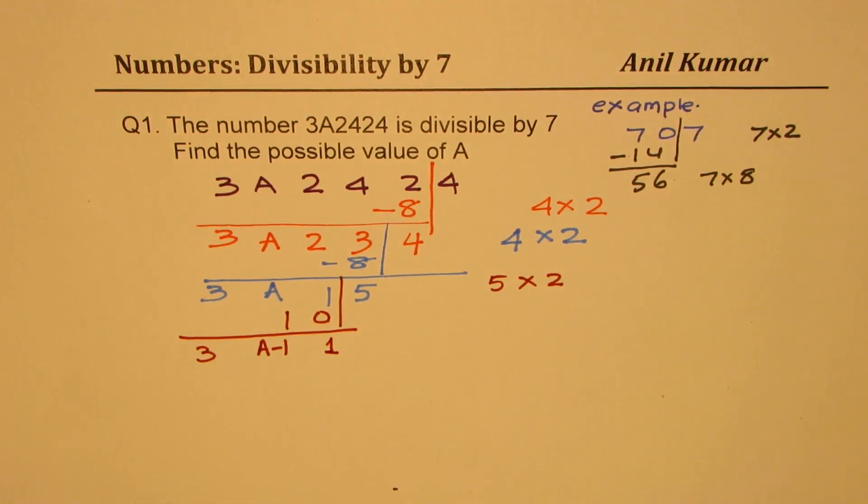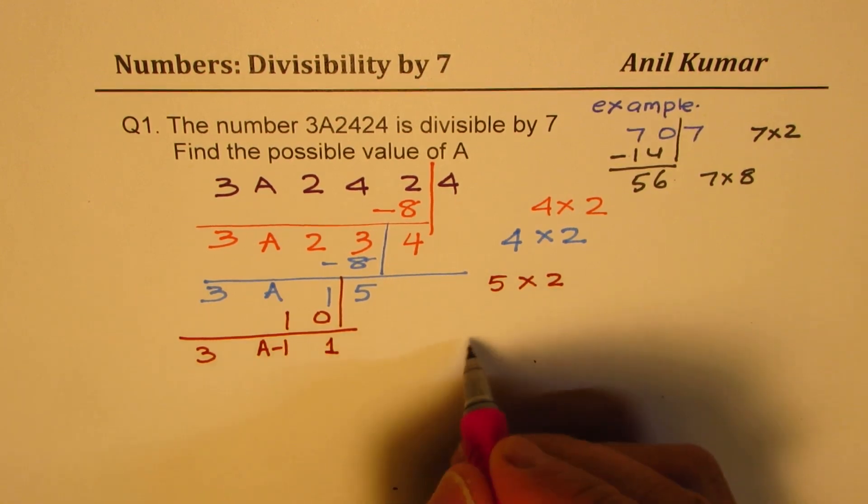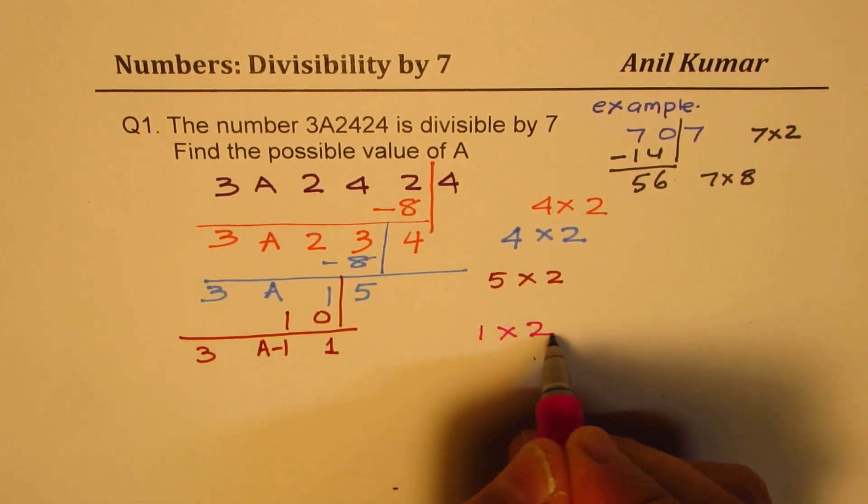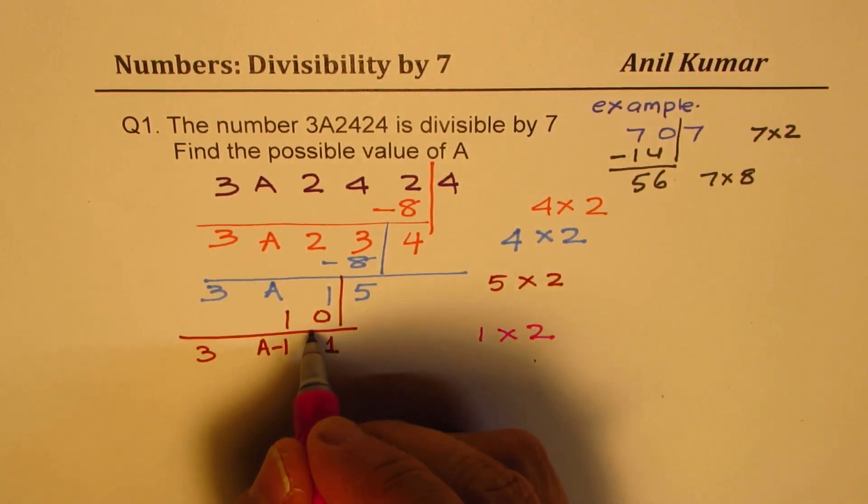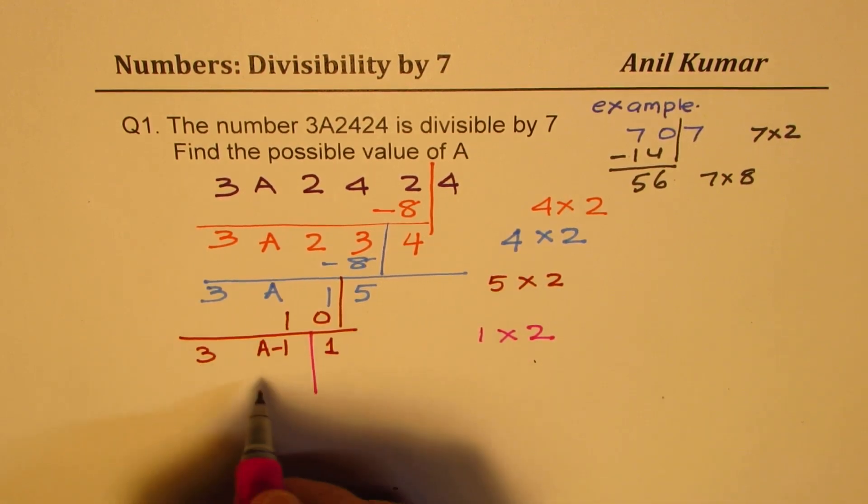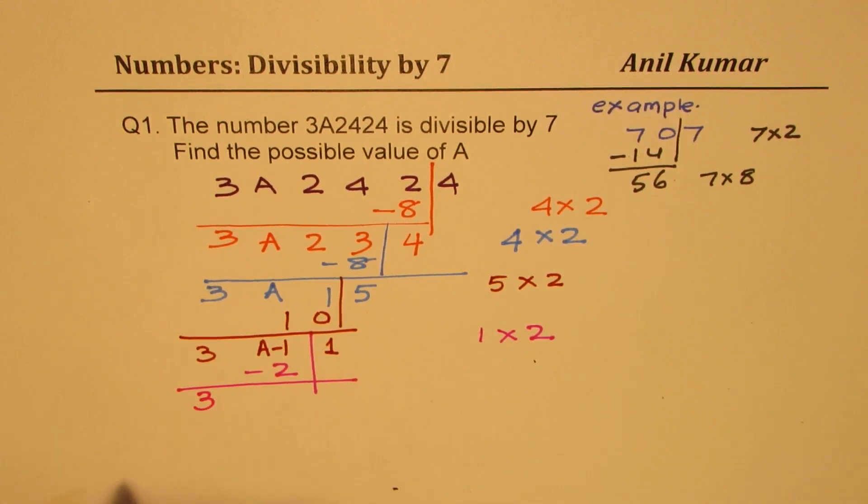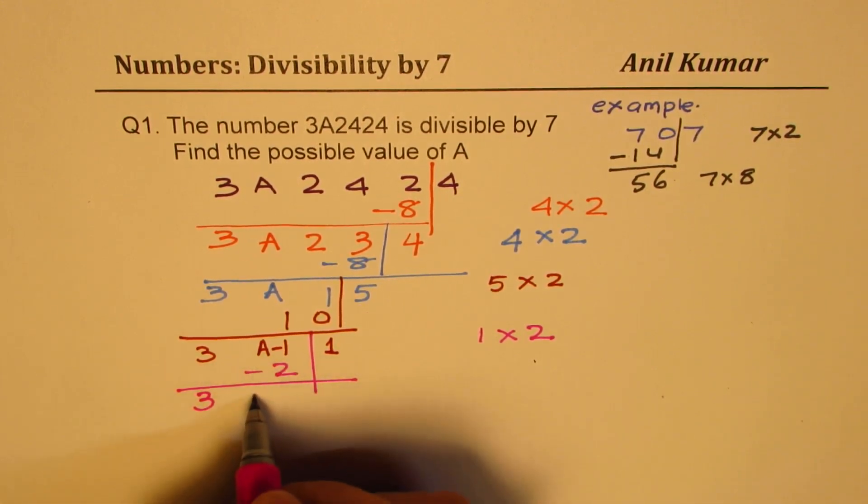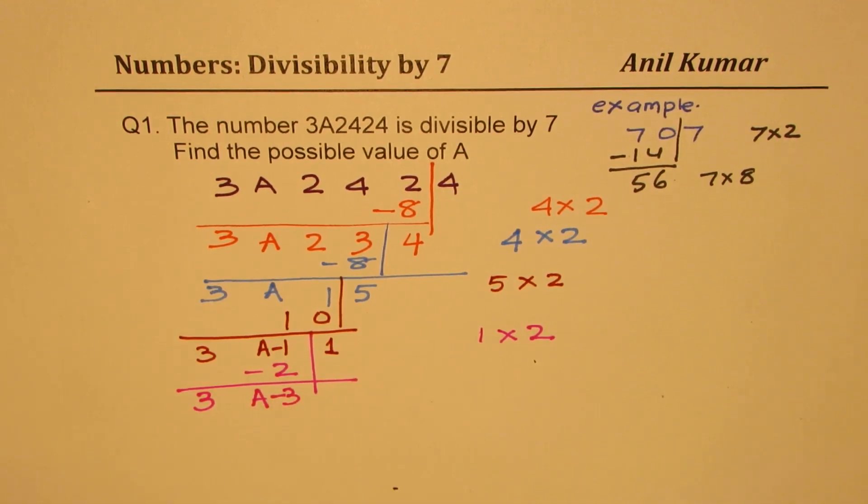Now what can I do? Well, I have to multiply 1 by 2. So I have to multiply 1 by 2 and take away from the rest of the number. So we'll take away 2 from the rest of the number, that gives us 3 and here we get A minus 3. So that is a 2 digit number, which we get.